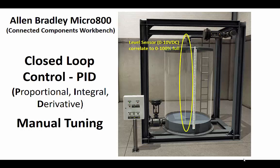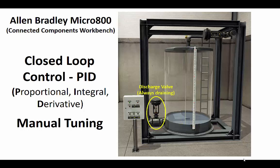It also includes a level sensor which provides a 0-10 volt DC signal, and we'll correlate that in our program to a tank fill level between 0-100% full. It also includes this discharge valve, and I've set that up to always be draining. We'll pretend that this is a manual valve that's been opened and is always draining fluid.